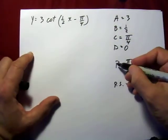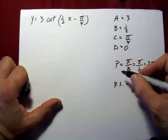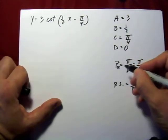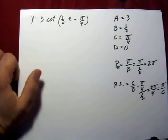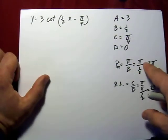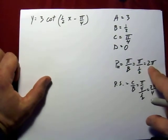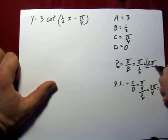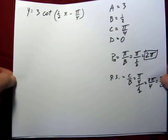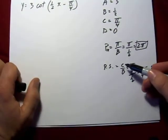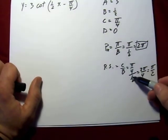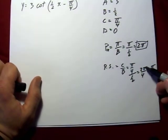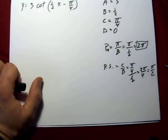Now, from the B value, we get the period. Sometimes I label it as P-E-R. Period equals π over B, which is π over 1/2. Therefore, my period is 2π. The phase shift is defined as C over B, in this case, π/4 divided by 1/2. So 2π/4 reduces to π/2.